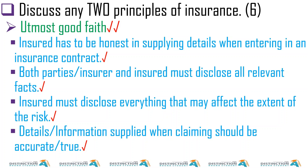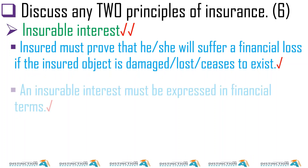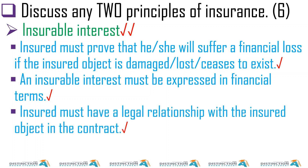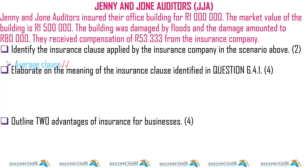Details or information supplied when claiming should be accurate and true. Then we go to insurable interest — the insured must prove that he or she will suffer a financial loss if the insured object is damaged, lost, or ceases to exist. An insurable interest must be expressed in financial terms, and the insured must have a legal relationship with the insured object in the contract.